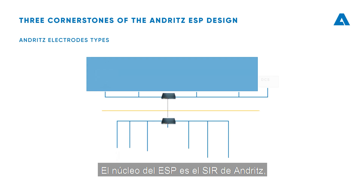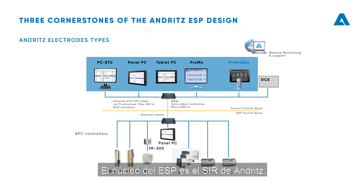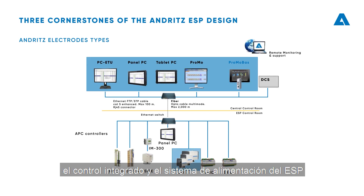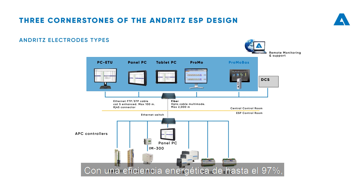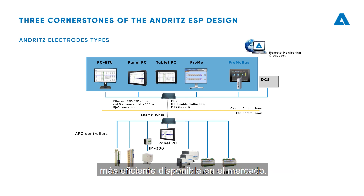The heart of the ESP is the ANRITS-SER, the integrated control and ESP power supply system which includes the self-optimization software, EPIC. With up to 97% energy efficiency, the ANRITS-SER is the most efficient ESP power supply available on the market.